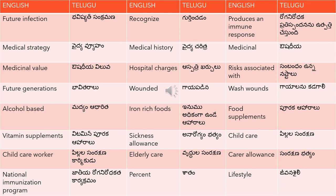National immunization program is 'jatiyya roganirodha kata karyakramam' — 'karyakramam' means program, 'jatiyya' means national. Percent is 'satam'. Lifestyle is 'jivanasaili'.